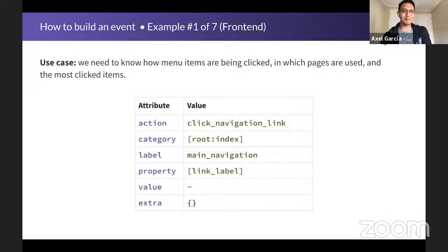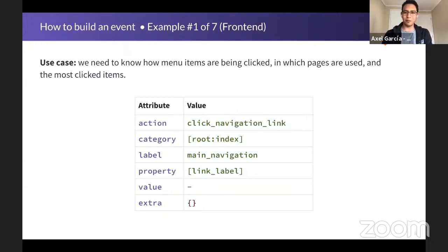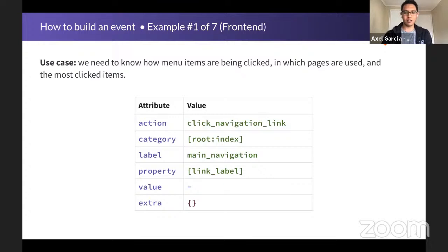Let's jump into the fun part — a bunch of examples. In this first example, the use case is: we need to know how many items are being clicked, on which pages they are used, and which are the most clicked items. The action is click_navigation_link, attached to each of the buttons. The category is provided automatically — in this case root_index, since we're on the homepage. The label is main_navigation as the identifier of the element, and as property we store the label of each link. We're not passing anything to value or extra.